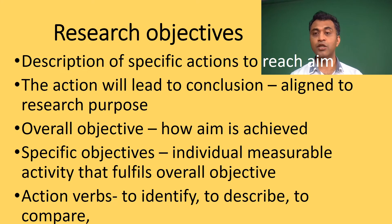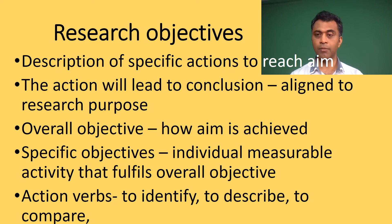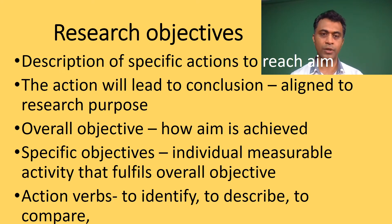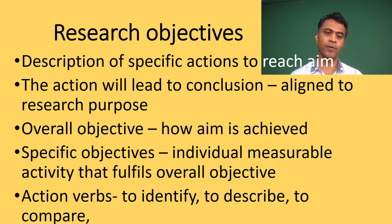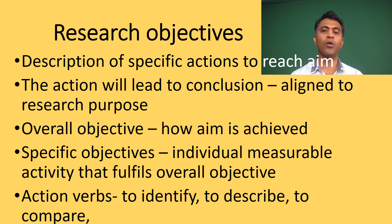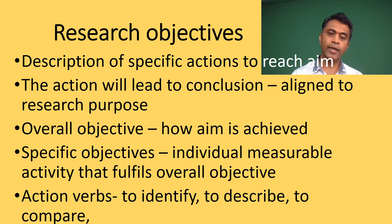Coming to research objectives: these are descriptions of specific actions to reach the aim, which suffice the research purpose. Objectives include an overall objective and specific objectives. The overall objective describes how the overall aim will be achieved, while specific objectives are small, individual, measurable activities that lead to the fulfillment of the overall objective.